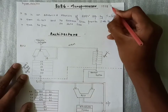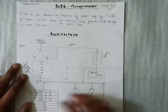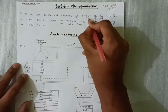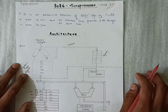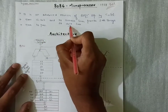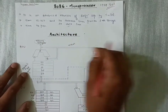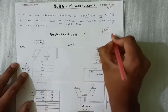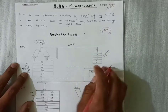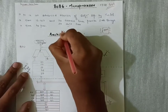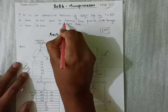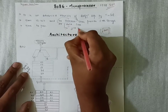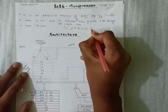The 8086 microprocessor is developed by Intel in 1978, and this is the advanced version of the 8085 microprocessor. It has a 16-bit data bus and 20 address lines. It contains 40 pins total. With 20 address lines, that means 2 to the power of 20, giving a memory size of 1 MB.